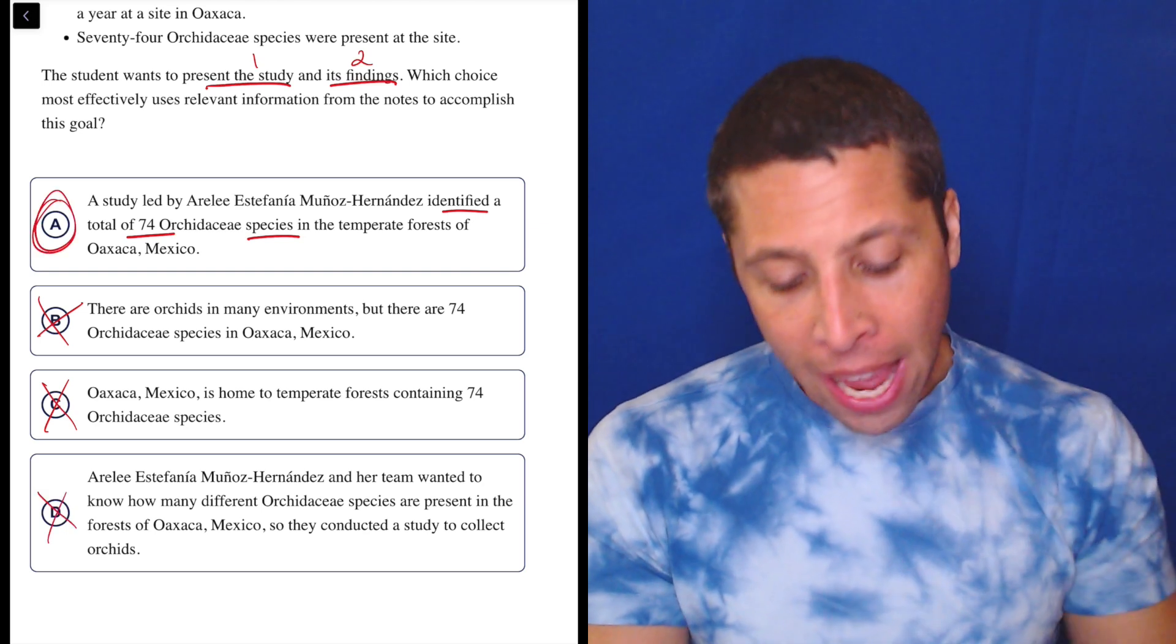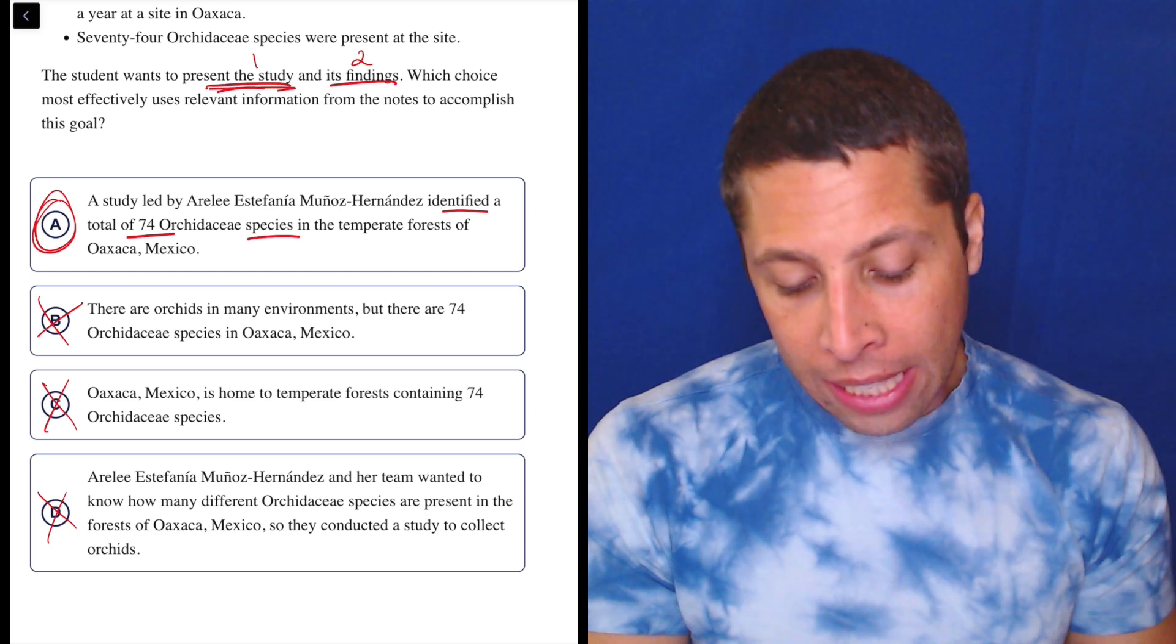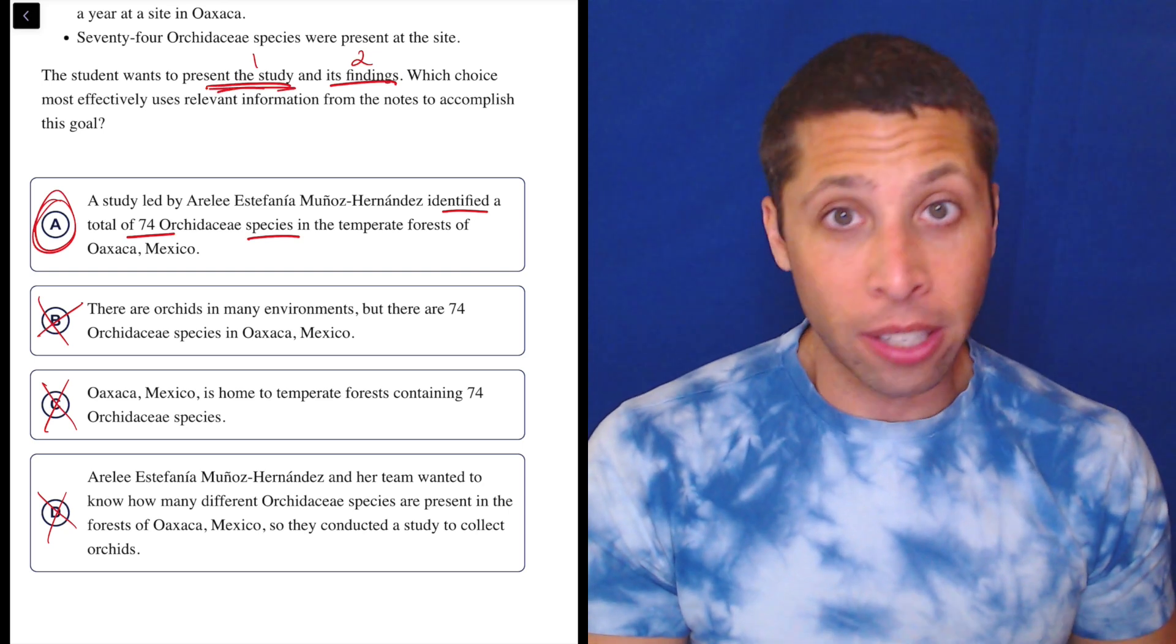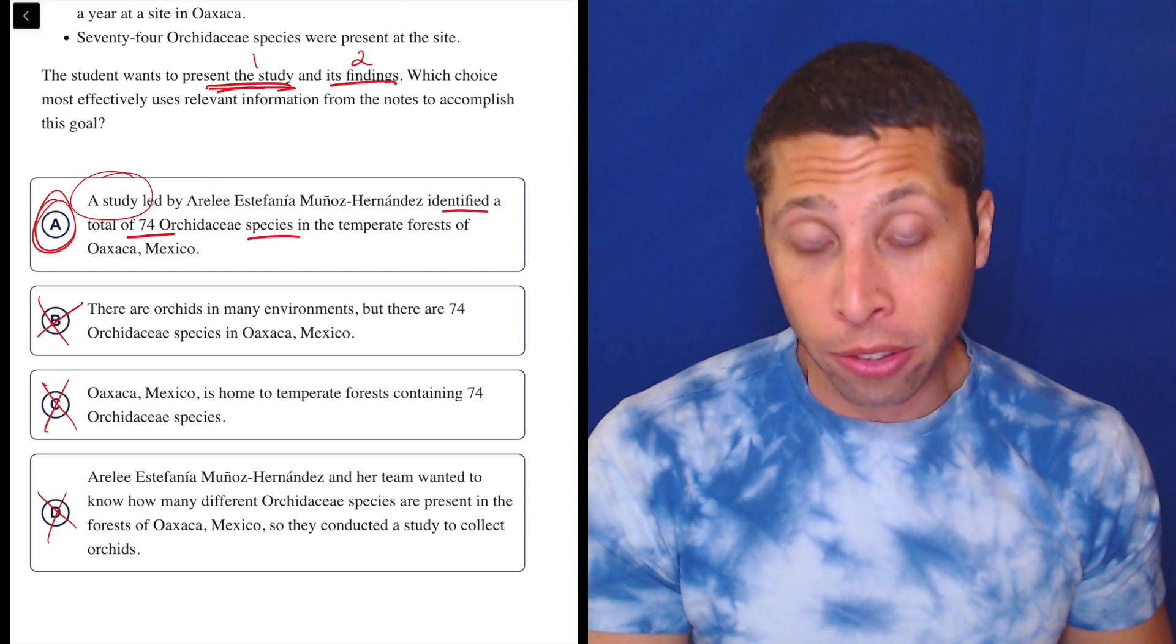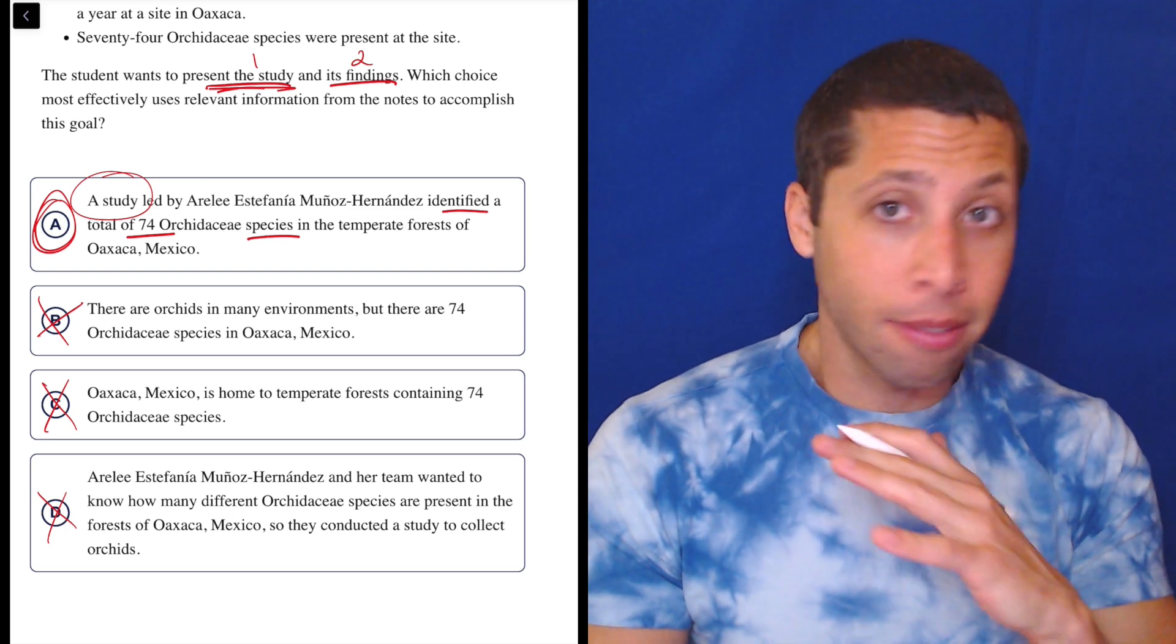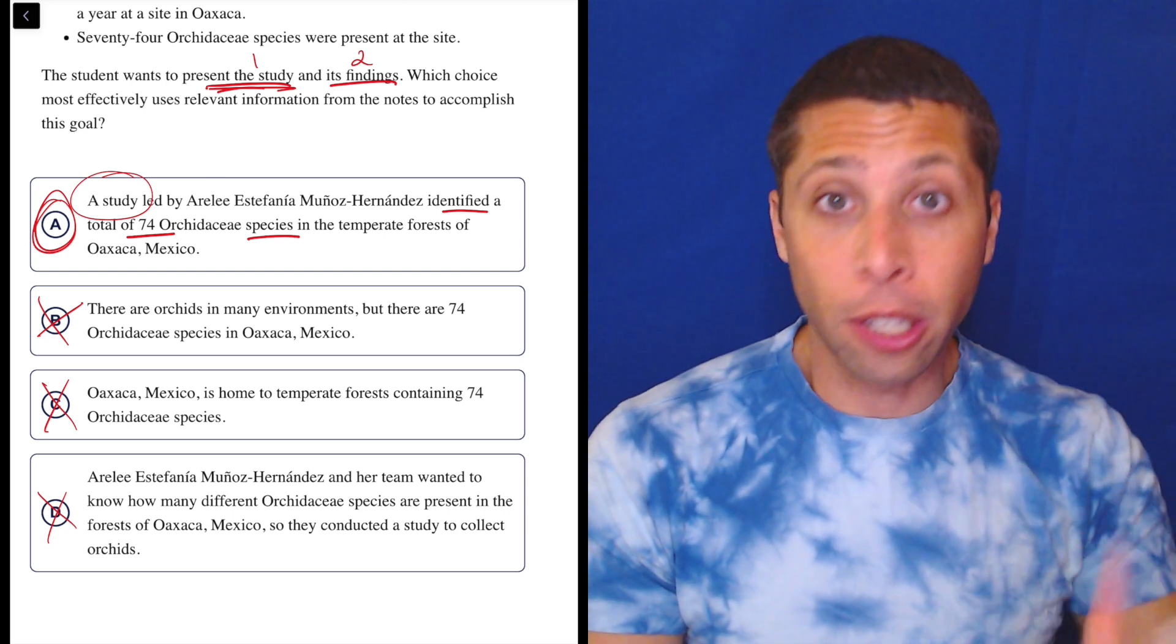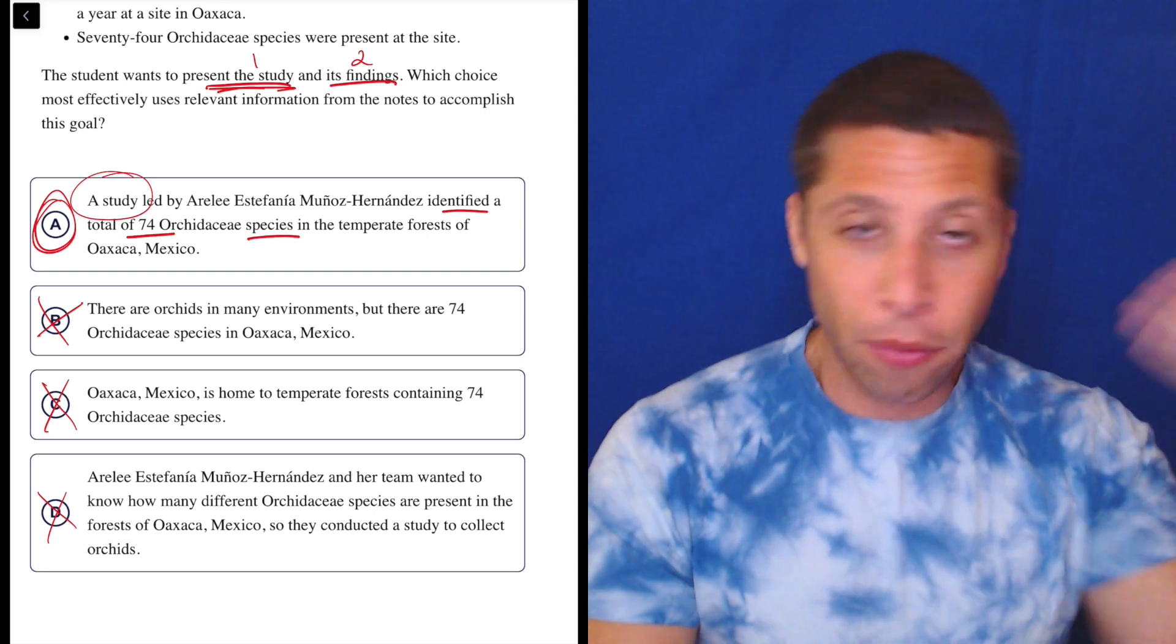So it's got to be A. And this is the thing - this goal number one, as much as it's even a goal here, is very vague. Present the study just kind of means maybe mention that there's a study. The findings piece, though, that is very understandable to me. That means the conclusions, the results. They found 74 species.